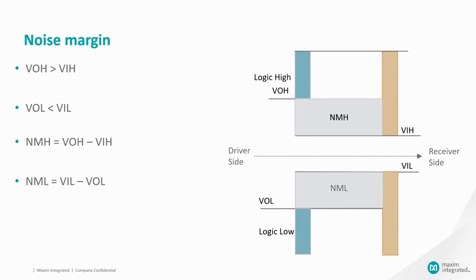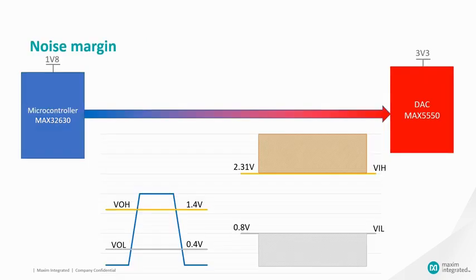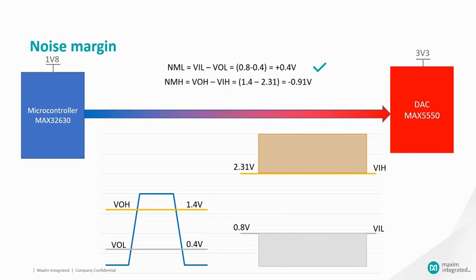Now let us take an example. Threshold levels of both MAX32630 microcontroller and MAX250 DAC are shown in the graph. Calculating the noise margins, NML is equal to 0.4V and NMH is equal to minus 0.91V. Since NMH is negative, these two ICs cannot be interfaced directly. We must use a level translator to interface them.